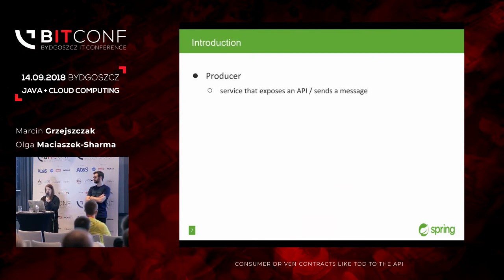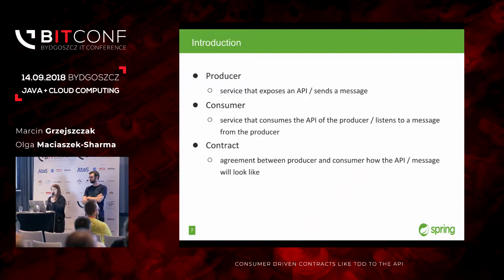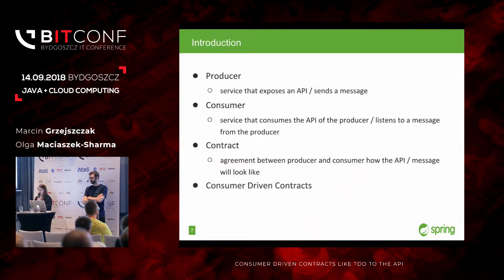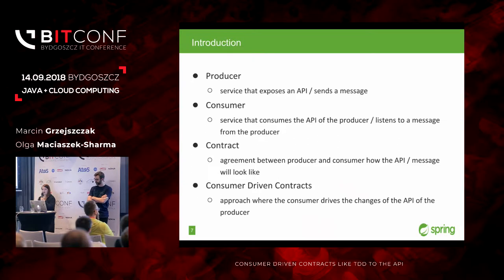A producer is any application that exposes a REST API or sends messages to other applications. A consumer is a service that will consume this REST API or will listen to the messages from the producer. A contract is an agreement on the API — either REST API or messaging API — these are the rules about how the API will look, what it will return, what requests it will take. And consumer-driven contracts are contracts that are designed and changed with strong collaboration with the consumer, where the consumer drives the changes and drives the design of the API.